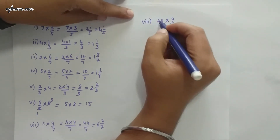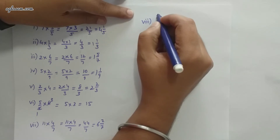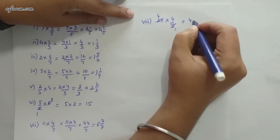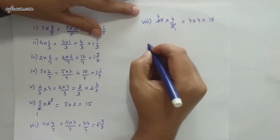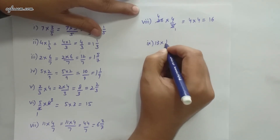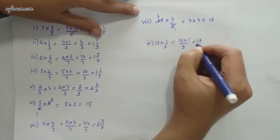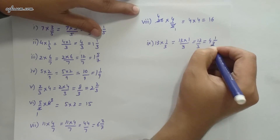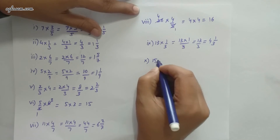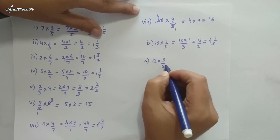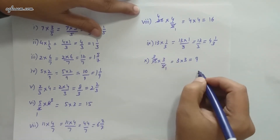Part 8: 20×(4/5). This is reducible — 20 divided by 5 = 4, so it becomes 4×4 = 16. Part 9: 13×(1/3) = 13/3, which is 4 and 1/3. Part 10: 15×(3/5). Reducible: 15 divided by 5 = 3, so it's 3×3 = 9. This completes all 10 parts of question 3.